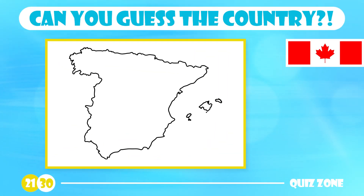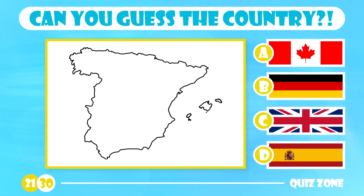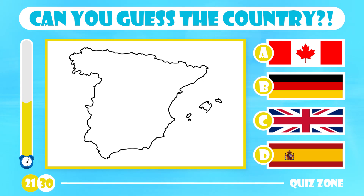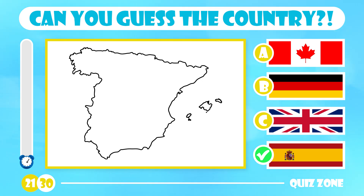What country is this? Canada, Germany, United Kingdom or Spain? The answer is Spain. Located in southwestern Europe, it has a population of over 46 million. In the 15th century, Spain became one of the first modern world empires with the best naval capabilities.